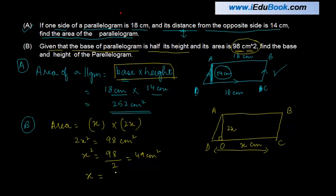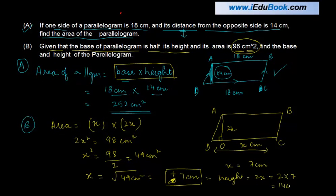Which says that X is equal to square root of 49 cm square or plus minus 7 cm. But we know that the length cannot be negative. So the base which is X is equal to 7 cm. And the height is equal to 2x is equal to 2 times 7, 14 cm.